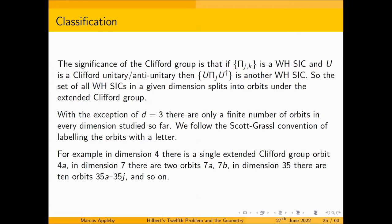That means the set of Weyl-Heisenberg SICs in a given dimension splits into orbits under the extended Clifford group. With the exception of dimension three — which is special in many ways — there are only a finite number of orbits in every dimension studied so far. For example, in dimension four there is a single orbit labeled 4a; in dimension seven there are two orbits, 7a and 7b; in dimension 35 there are ten orbits, and so on.